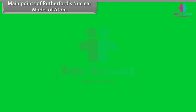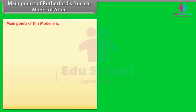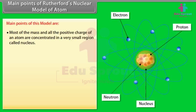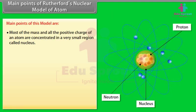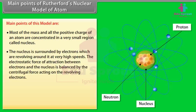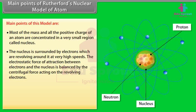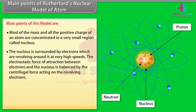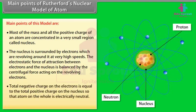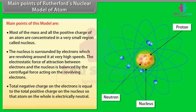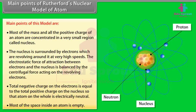Main points of Rutherford's nuclear model: 1. Most of the mass and all the positive charge of an atom are concentrated in a very small region called the nucleus. 2. The nucleus is surrounded by electrons revolving at very high speeds; the electrostatic attraction between electrons and nucleus is balanced by centrifugal force. 3. Total negative charge on electrons equals total positive charge on the nucleus, so the atom is electrically neutral. 4. Most of the space inside an atom is empty.